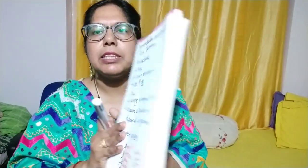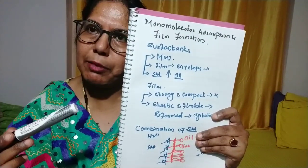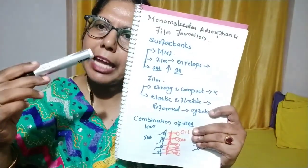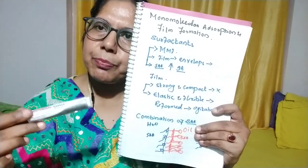The mechanism: as soon as we add surfactants — either soap, span, tween, or generally any surfactant — into the emulsion, it will get adsorbed between the oil and aqueous phase, thereby forming monomolecular films. As soon as the film forms, it envelopes the dispersed globules, irrespective of whether they are oil phase or aqueous.